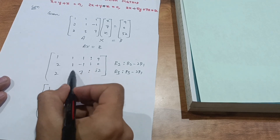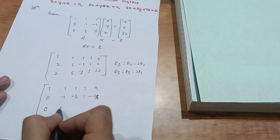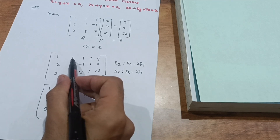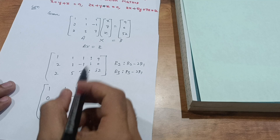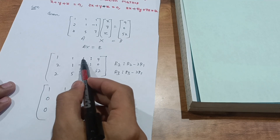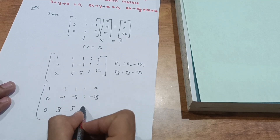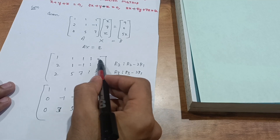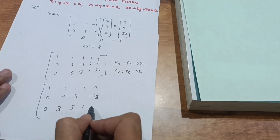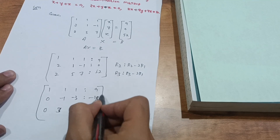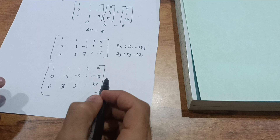Simultaneously applying R3 → R3 minus 2 times R1: [2 minus 2, minus 5 minus 2, 7 minus 2 | 52 minus 18] which gives [0, minus 3, 5 | 34]. Wait — 5 minus 2 is 3, and 7 minus 2 is 5. So row 3 becomes [0, 3, 5 | 34].